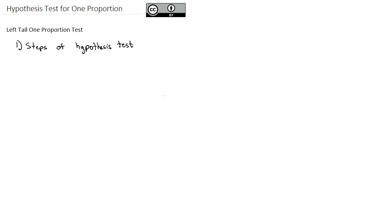So let's look at the steps of a hypothesis test. And then we'll do an example where we do a left tail hypothesis test on one proportion. The first step for every hypothesis test is to define what are the hypotheses. Then we'll draw a picture to help us visualize what's going on in the problem.